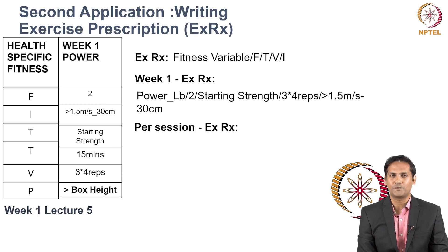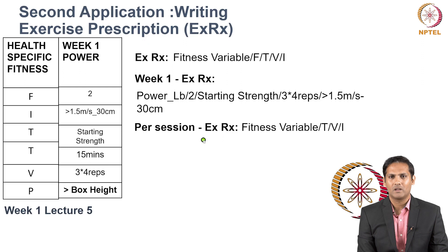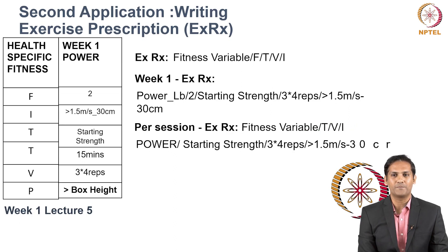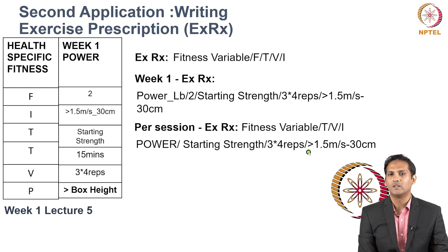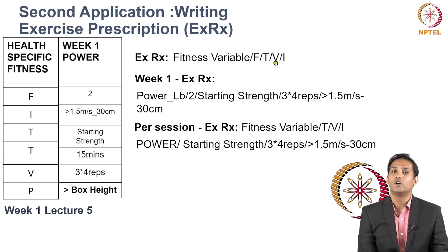You can also write an exercise prescription for a single workout session, with a slight change in format — frequency is excluded. For day one, session one of week one: fitness variable is power — lower body; type of training is starting strength; volume is three sets of four repetitions; and intensity is greater than 1.5 meters per second. This is how you use FITTVP to write a prescription both on a weekly basis and for a single workout session.